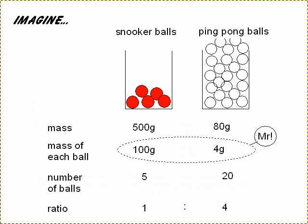So an analogy here might be to think about, I've got some snooker balls, which are heavy, I've got some ping pong balls, which are light, and I've got a mass of 500 grams of the snooker balls and 80 grams of the ping pong balls. So in terms of mass, I've got a greater amount of snooker balls than ping pong balls. But in terms of the number of balls present, I need to take into account the mass of each ball. So we could say that for snooker balls, that's 100 grams per ball, but ping pong balls, much lighter, 4 grams per ball.